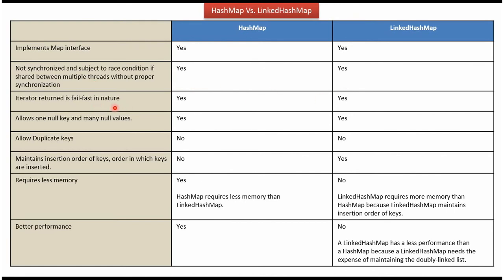The iterator returned is fail-fast in nature — in case of HashMap yes, in case of LinkedHashMap yes.